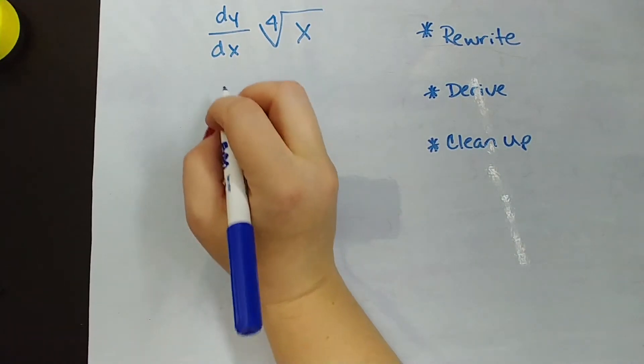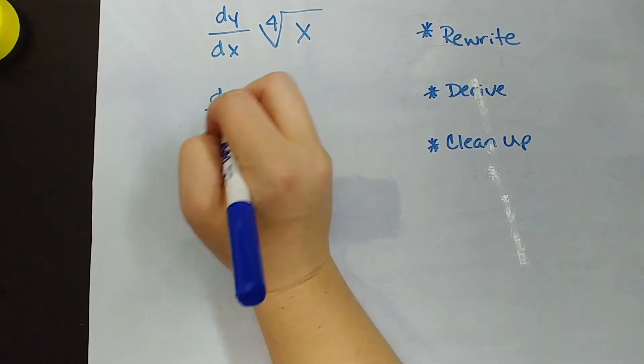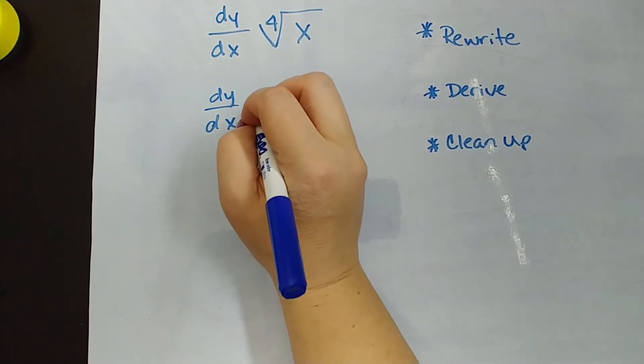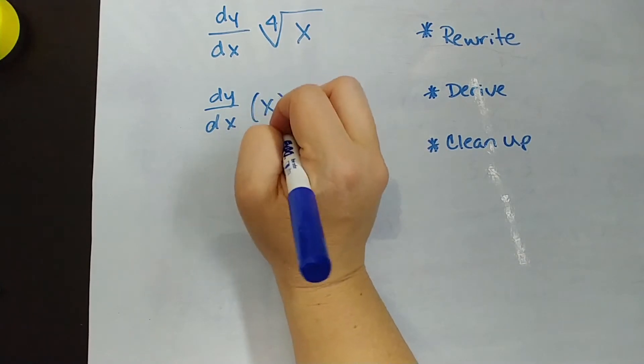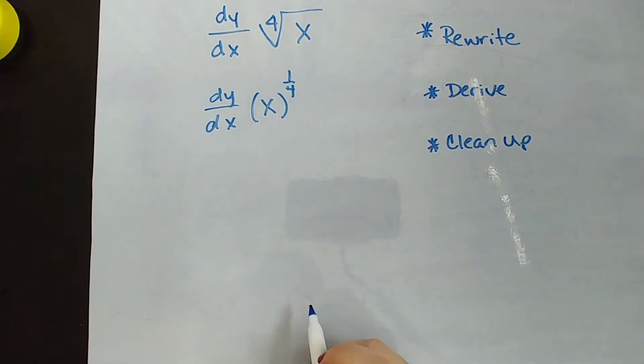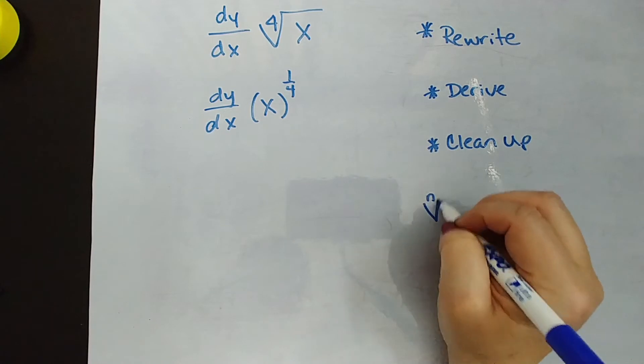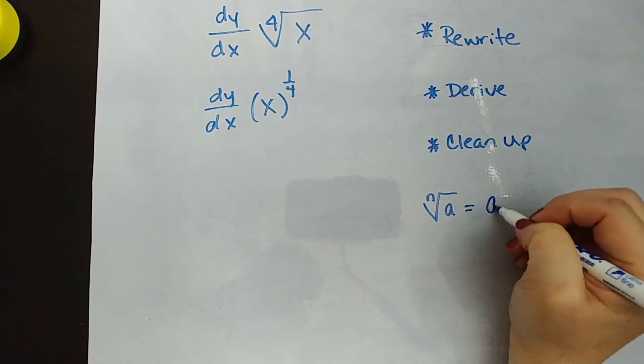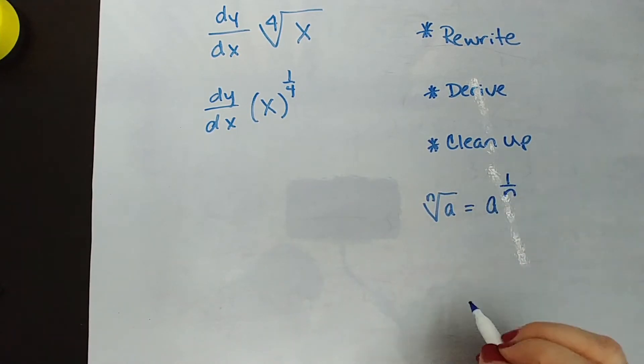So let's rewrite this. This is the same as asking for the derivative of x to the one-fourth power. The reason that's the same is because we know the nth root of some number a is equal to a to the one over n power.